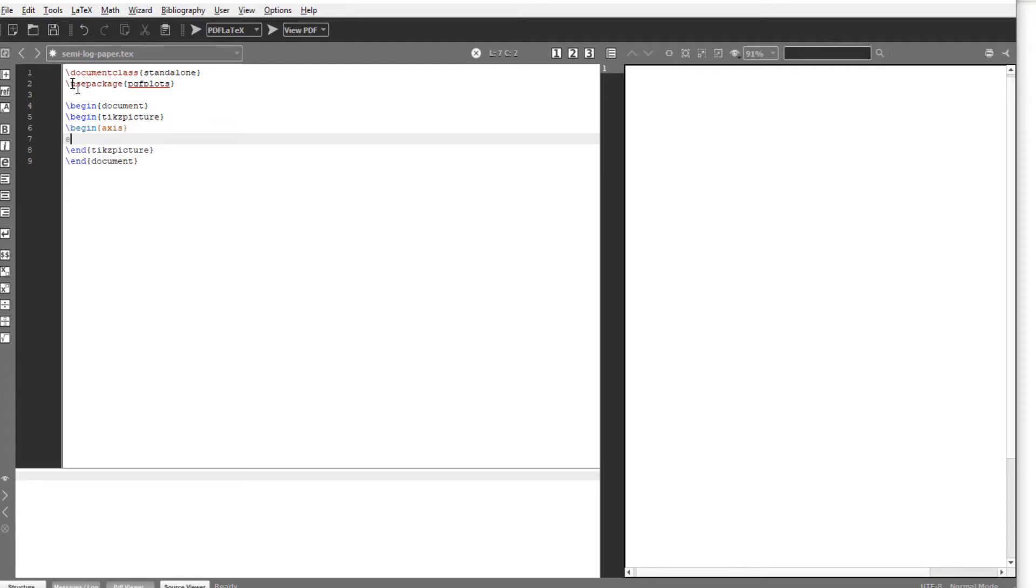Now inside this tikzpicture environment, I have to start axis environment. So begin axis and end axis. On x-axis I have logarithmic scale, so I would say xmode is equal to log. Now we are giving options to this axis environment. So we have to start a square bracket and all our options will be within this square bracket. Xmode equals log, and I will separate my options with commas. Ymode equals normal.